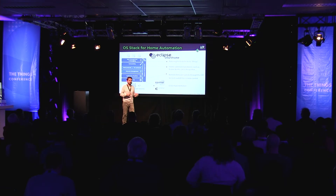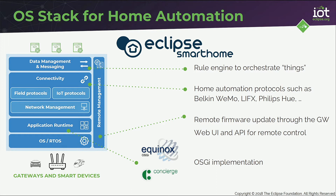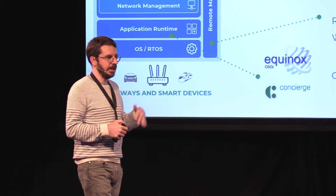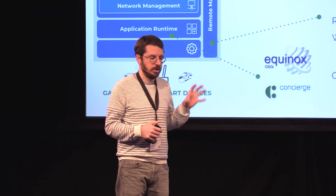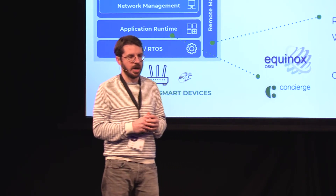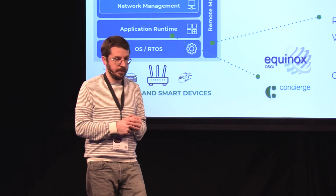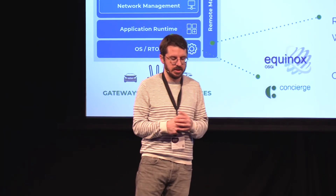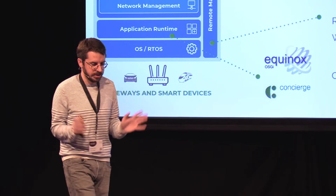Eclipse Smart Home is a specialized gateway stack more for home automation. Some of you, either as pet projects or real projects, might be familiar with OpenHAB. This covers all things home automation — rules to apply when the temperature goes above a specific threshold, and the hundreds of protocols needed to interface with IKEA light bulbs or Philips Hue, and so on. This is all available as part of the Eclipse Smart Home and OpenHAB ecosystem, under a business-friendly open-source license, which means you can take the code, ship it in your commercial product, and you're done.